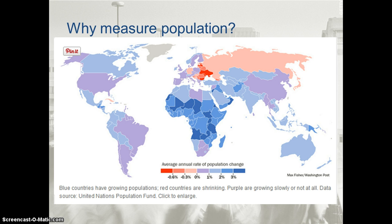Least developed countries, as opposed to most developed countries, are a division that geographers make. There are various shared characteristics, such as low per capita income, low literacy rates, low television numbers per household, and low hospital beds per capita that distinguish MDCs from LDCs. Least developed countries is where most of the population growth is occurring — we see that in Sub-Saharan Africa, as well as in the Middle East and parts of Western Asia.